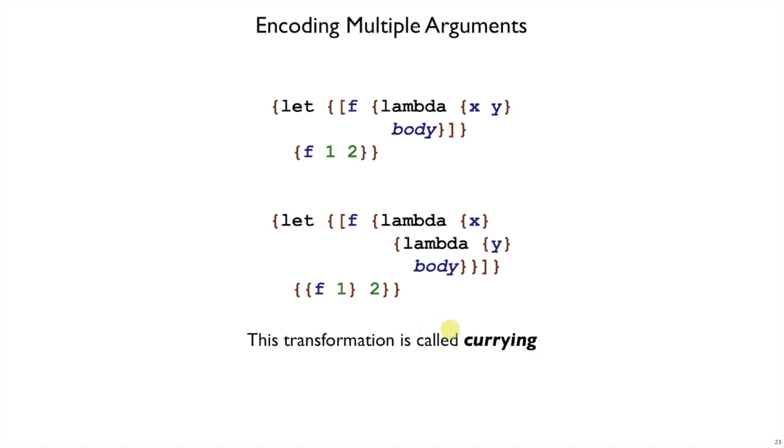This general transformation is called currying. We could make parse do this transformation, but instead we'll do it by hand. If we want to write a two-argument function, we'll just write it this way as nested one-argument functions, and it's not so bad to write and read it that way.